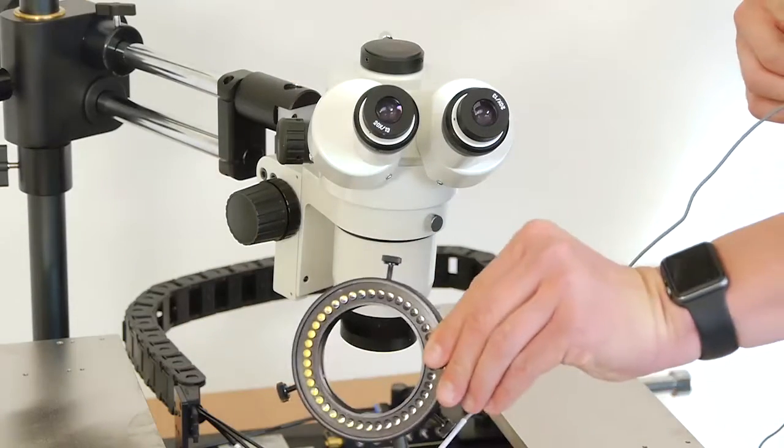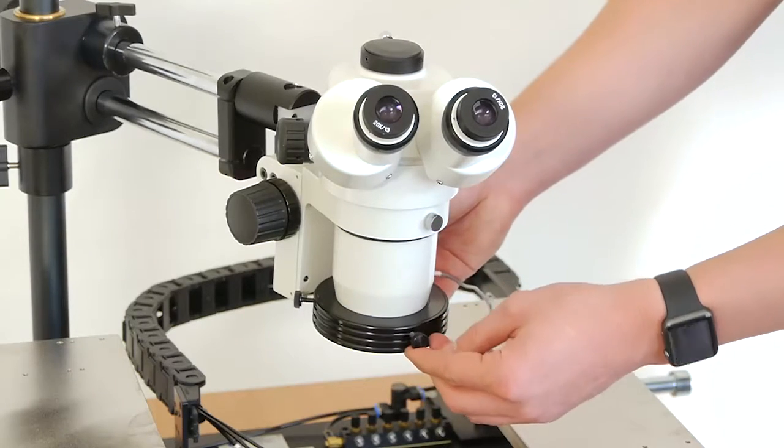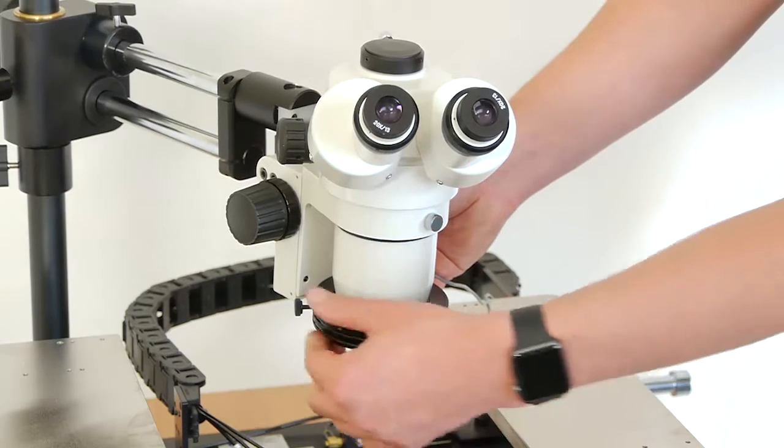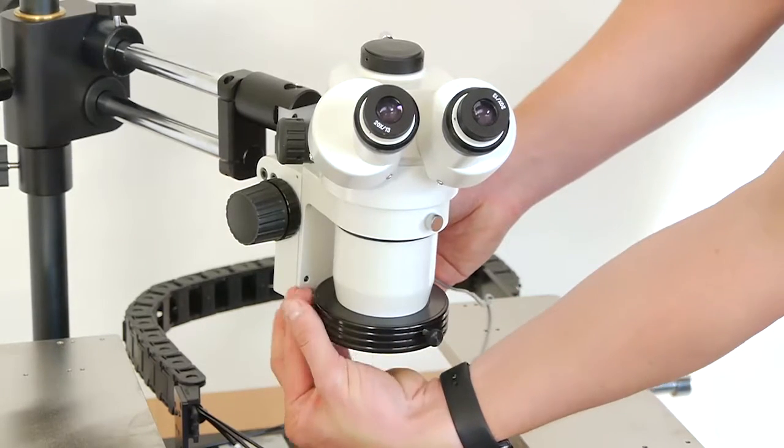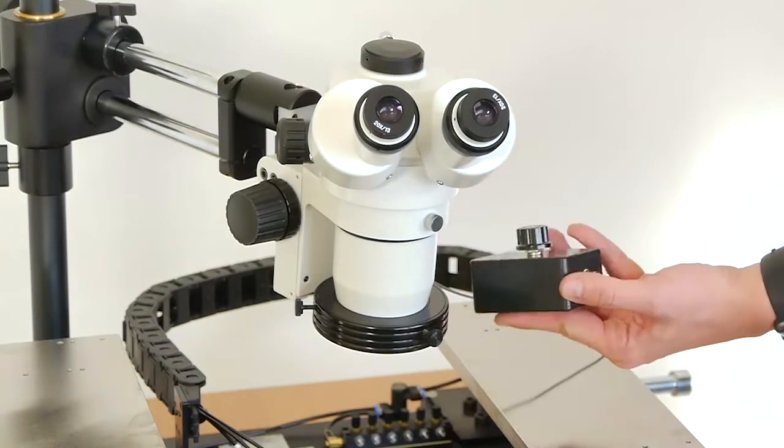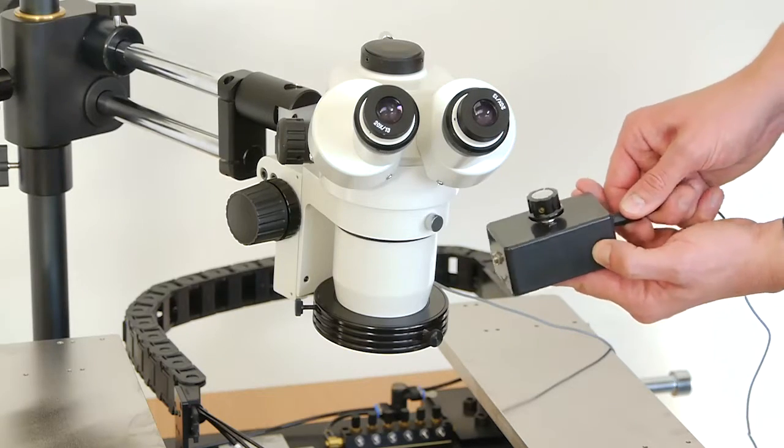To install the ring light, slide it over the microscope objective housing and tighten the thumb screws to secure the ring. After this you can connect the cable and the power supply to the control box.